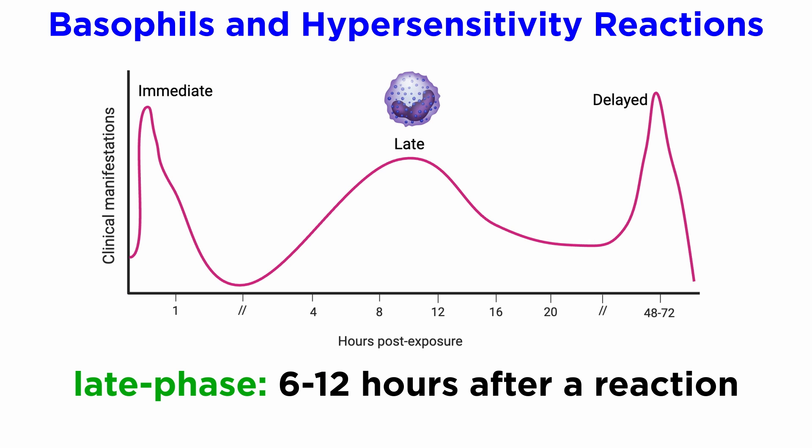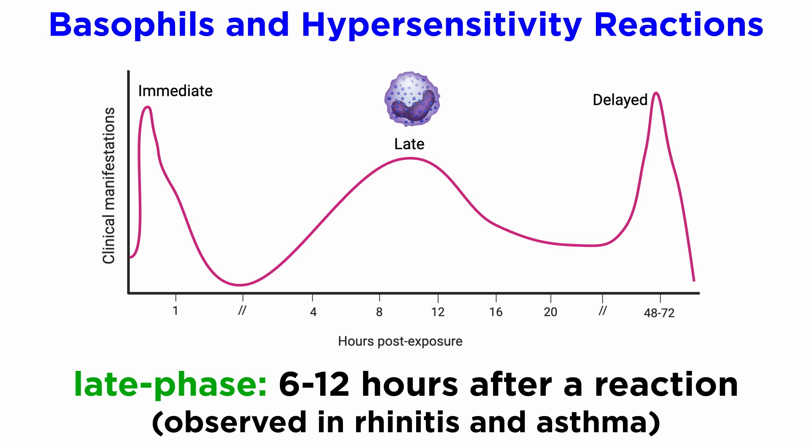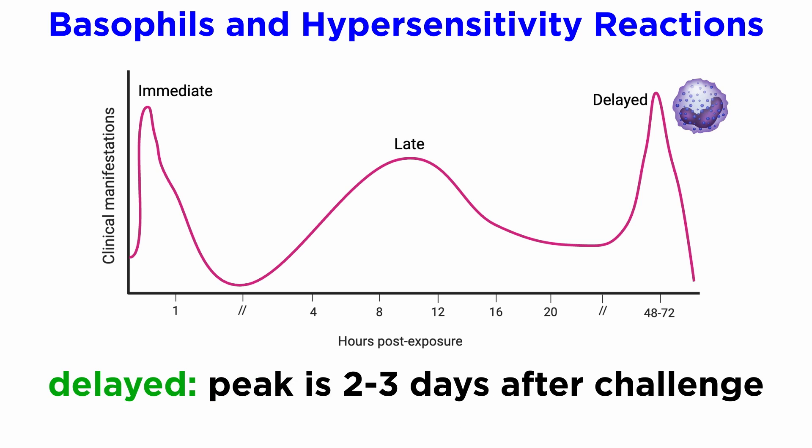Basophils are also involved in late-phase hypersensitivity reactions, which occur approximately 6 to 12 hours after an immediate hypersensitivity reaction, and can be observed in clinical cases such as allergic rhinitis and severe asthma. In delayed hypersensitivity reactions, the predominant granulocyte in the reaction is the basophil, with the peak reaction at the site of allergen challenge occurring 2 to 3 days after the challenge.